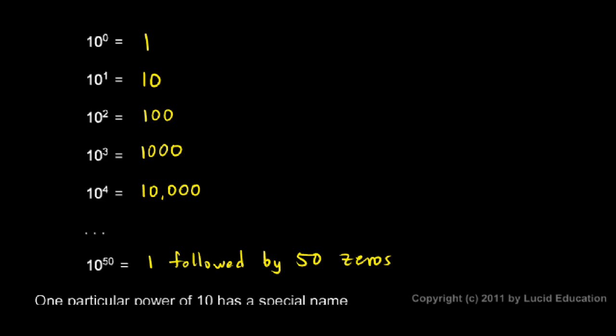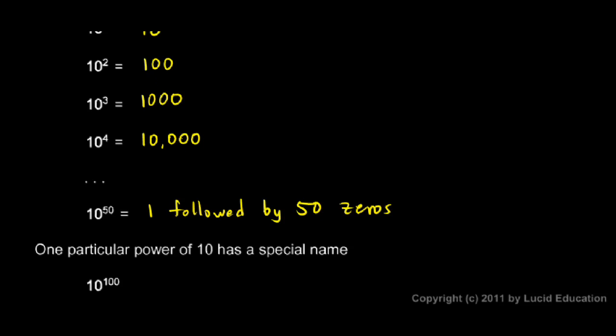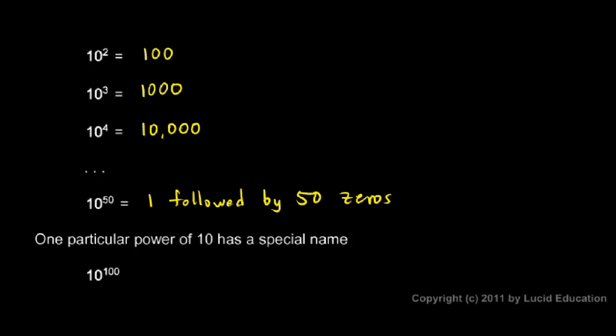Now, one particular power of 10 has a special name. That's 10 to the 100th. It is called a googol. G-O-O-G-O-L. Notice that that's not G-O-O-G-L-E. That's G-O-O-G-O-L.